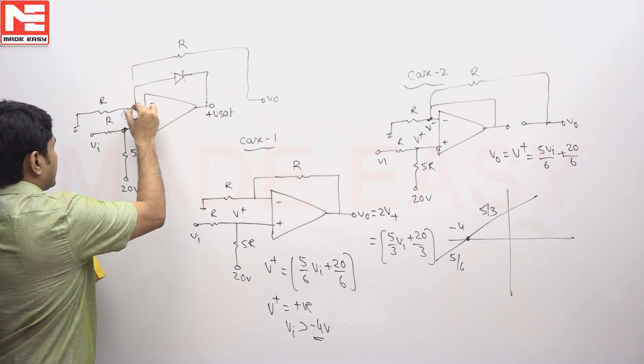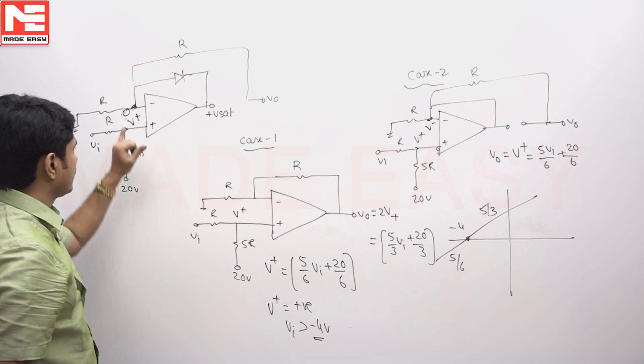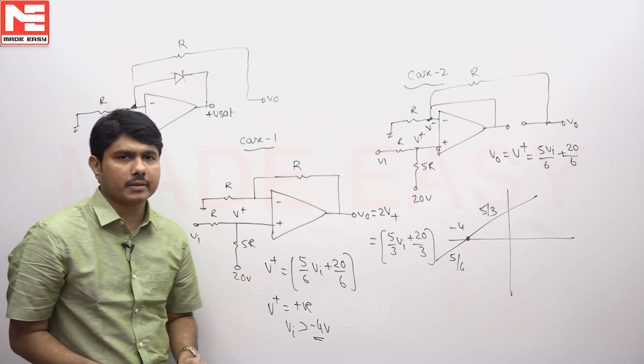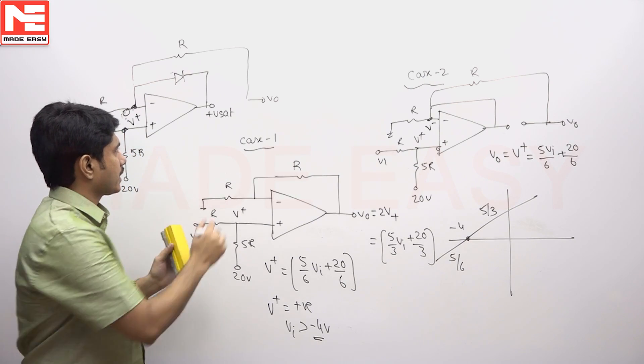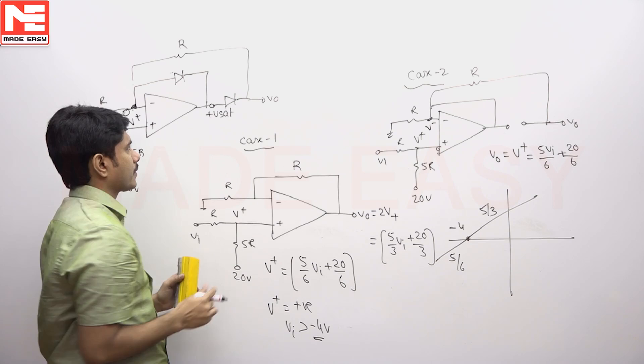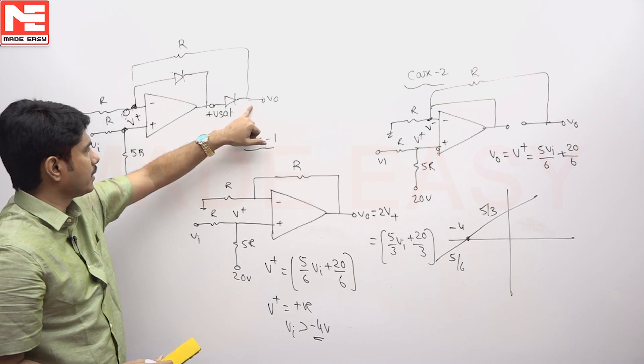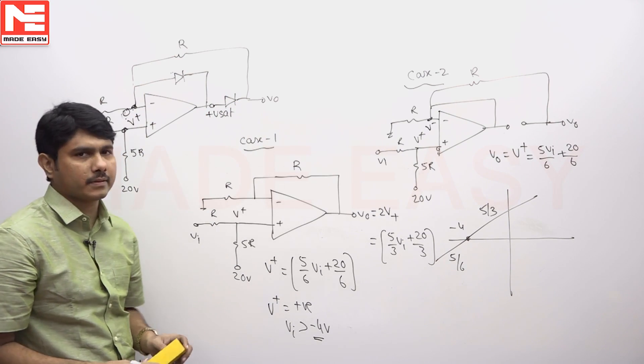Then your diode is connected like this. This side potential is initially 0, so 0 to plus V sat is showing that switch is off. Same manner, the second switch is showing that it is on because 0 potential here is cathode, anode is plus V sat.